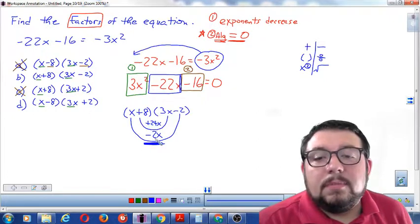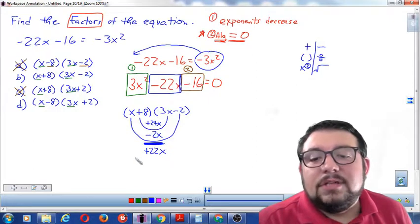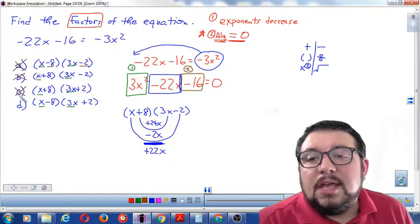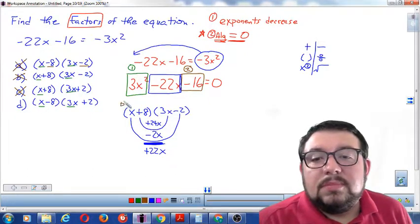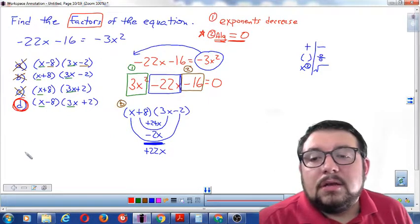Now we're going to combine those. Positive 24 minus 2 is positive 22x. Does this say positive 22x? No, it says negative 22x. So right away I know that B must be out. Remember, this was choice B I was testing. Which means that by default, D must be the correct answer.